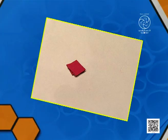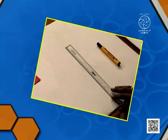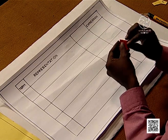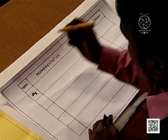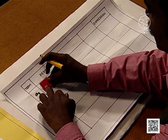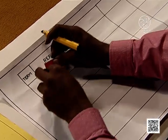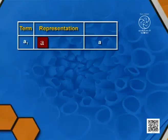The materials required are charts, paper strips, a marker, and a ruler. We take the first term as A. We represent it with this strip and denote it by A, so the first term is A.